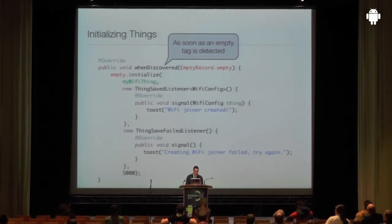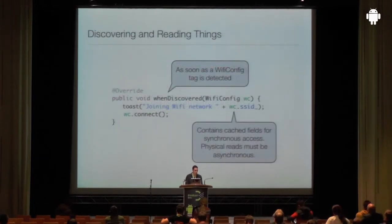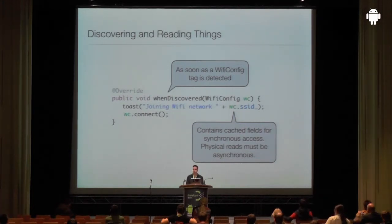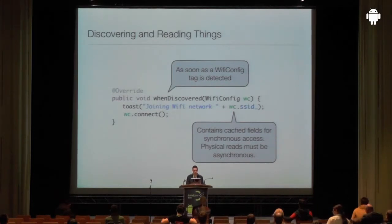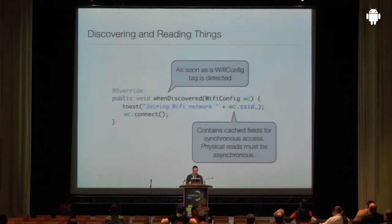There are overloaded versions of this method so you don't have to specify all listeners or provide all arguments every time. Once you have things on NFC tags, you discover them by overriding whenDiscovered again — this time with WifiConfig as the argument type. This method is invoked every time you scan a tag containing a WifiConfig. Morena deserializes the tag data, recreates the WifiConfig object, and caches the fields so you can access the SSID synchronously. This code connects to the network every time you scan a matching tag.